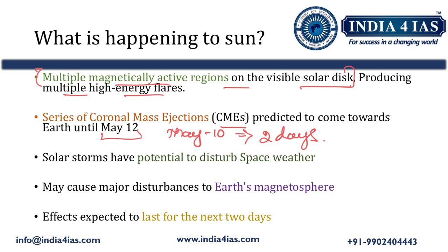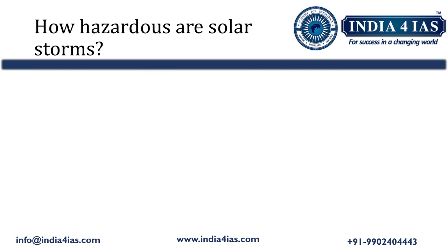This series of coronal mass ejections was predicted to continue until May 12, two days after the May 10 event. The multiple magnetically active regions on the solar disk are producing a series of coronal mass ejections. These solar storms have the potential to disturb space weather and cause disturbances in Earth's magnetosphere.